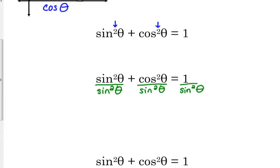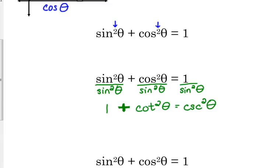What is something over itself equal to? One. So sine squared of theta over sine squared of theta equals one. Cosine over sine is cotangent, and as long as they are both squared, that is cotangent squared of theta. And one over sine is cosecant — it was sine squared, so that's cosecant squared. That gives us: one plus cotangent squared equals cosecant squared.